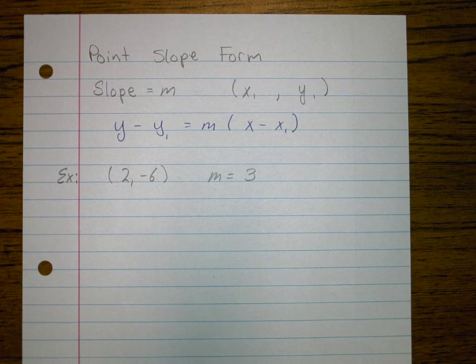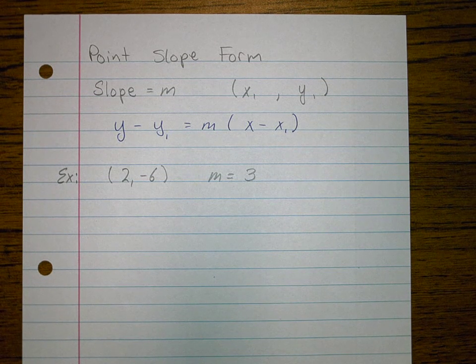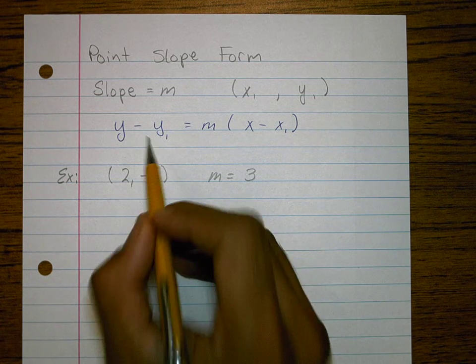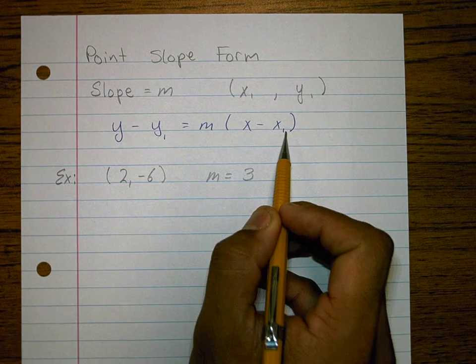This is a video on point-slope form of a linear equation. So looking at this, here's the equation: y minus y1 equals m times x minus x1.